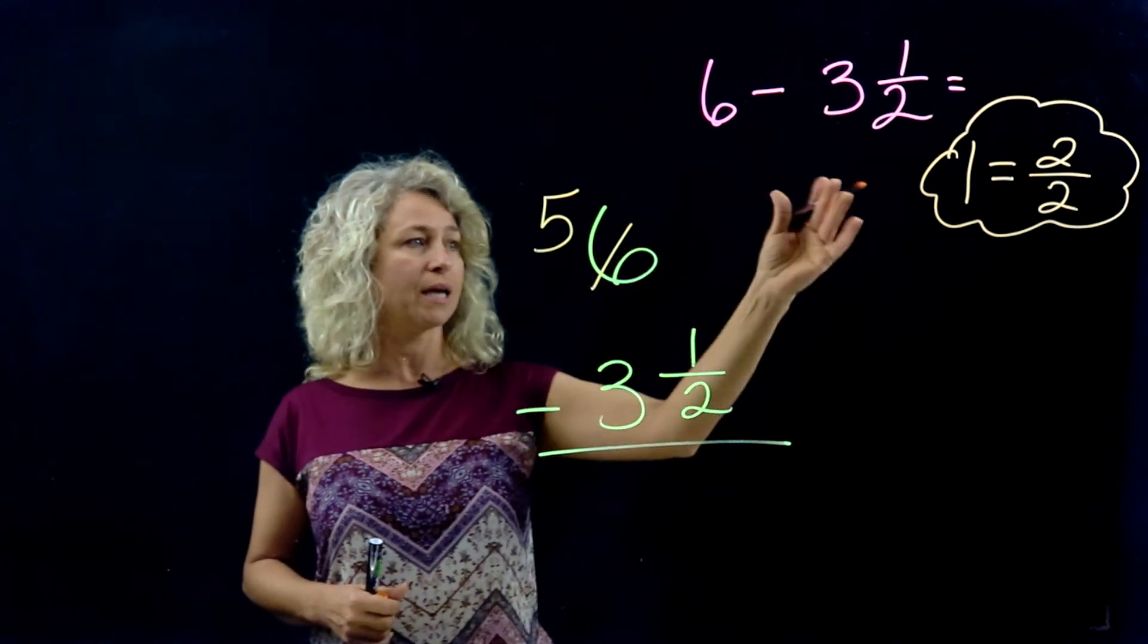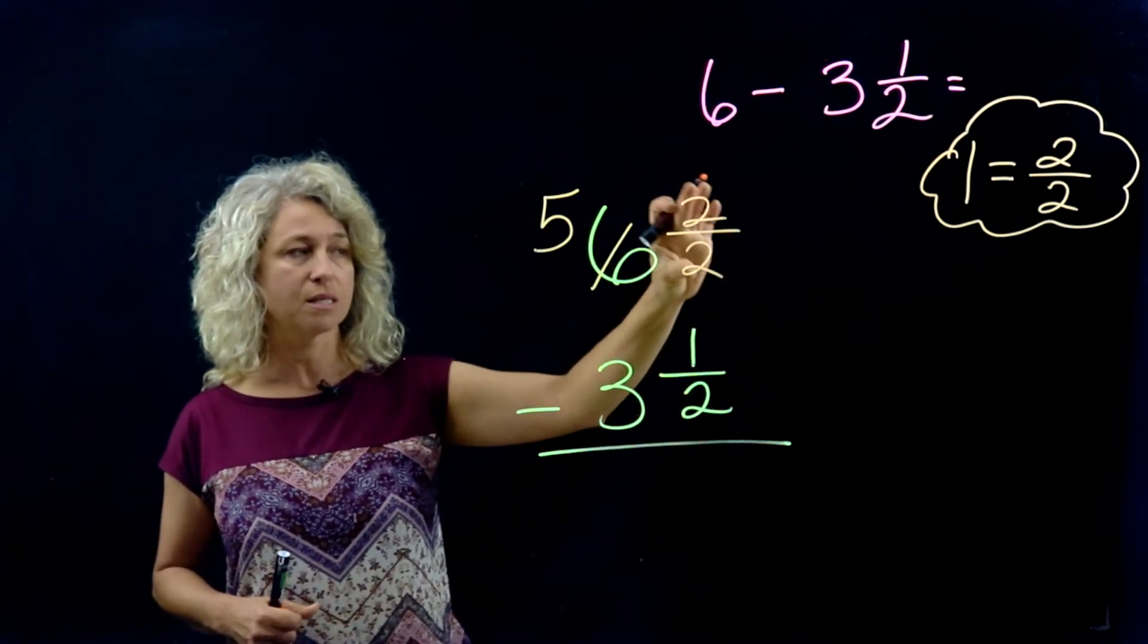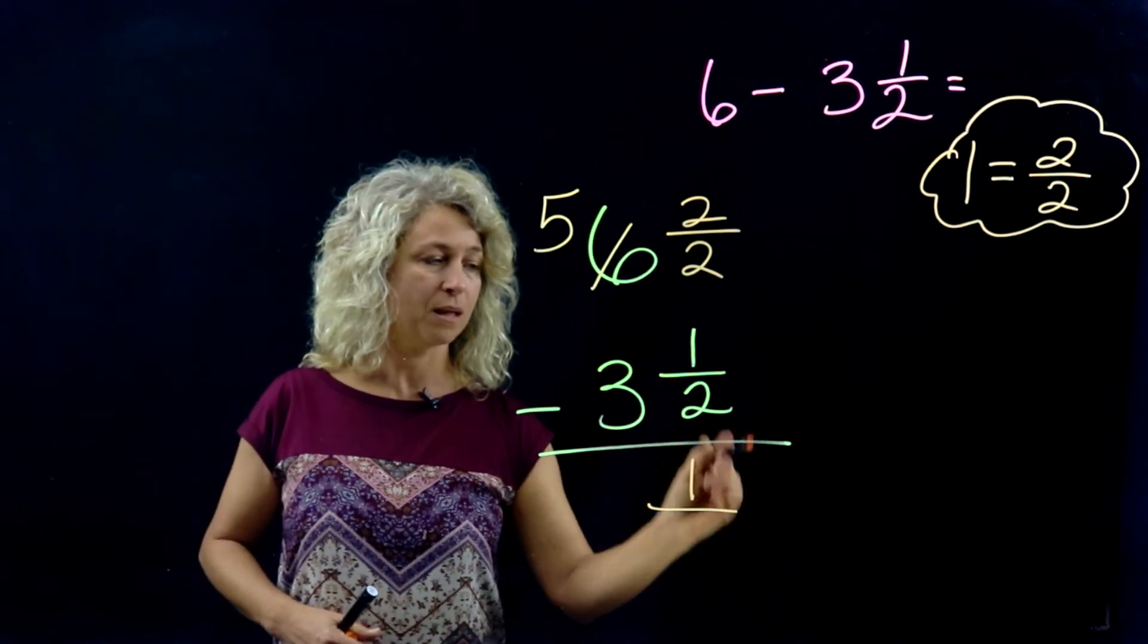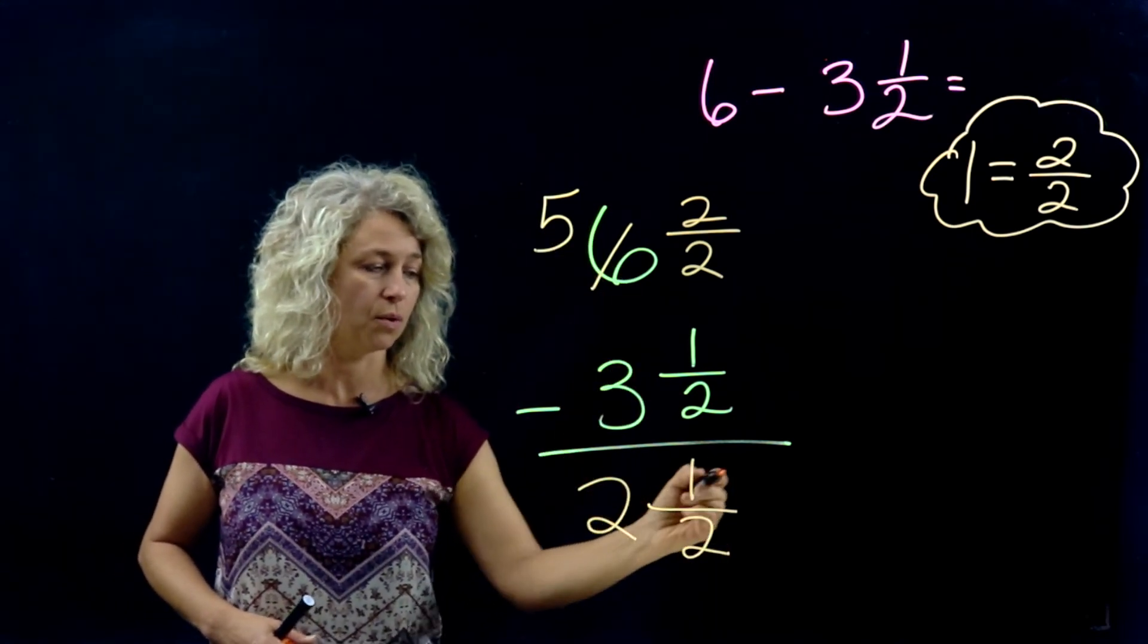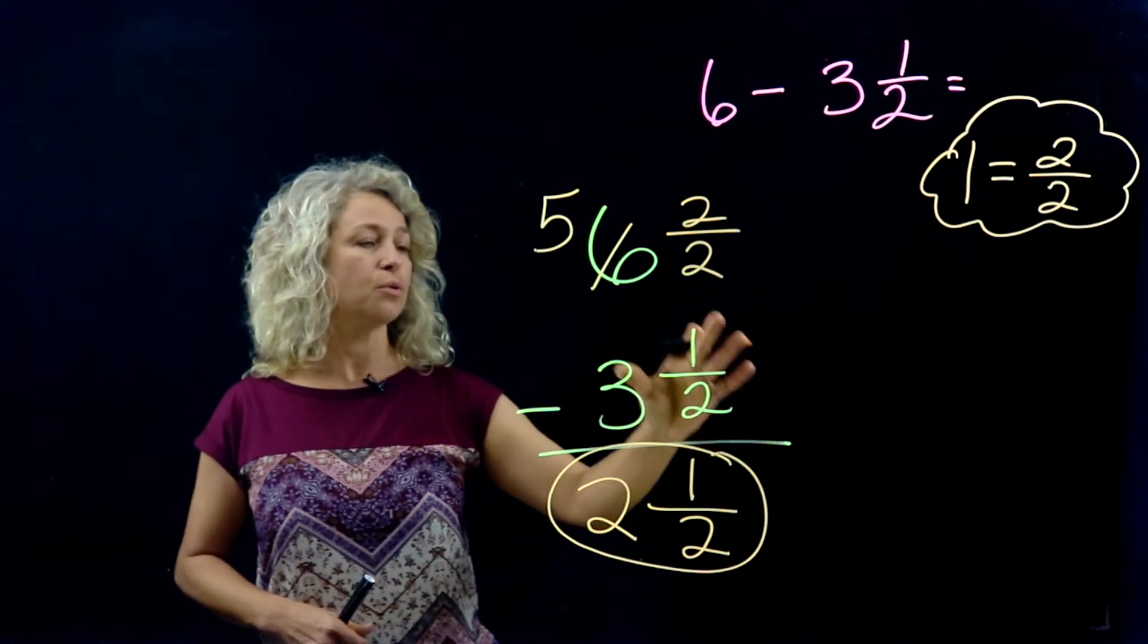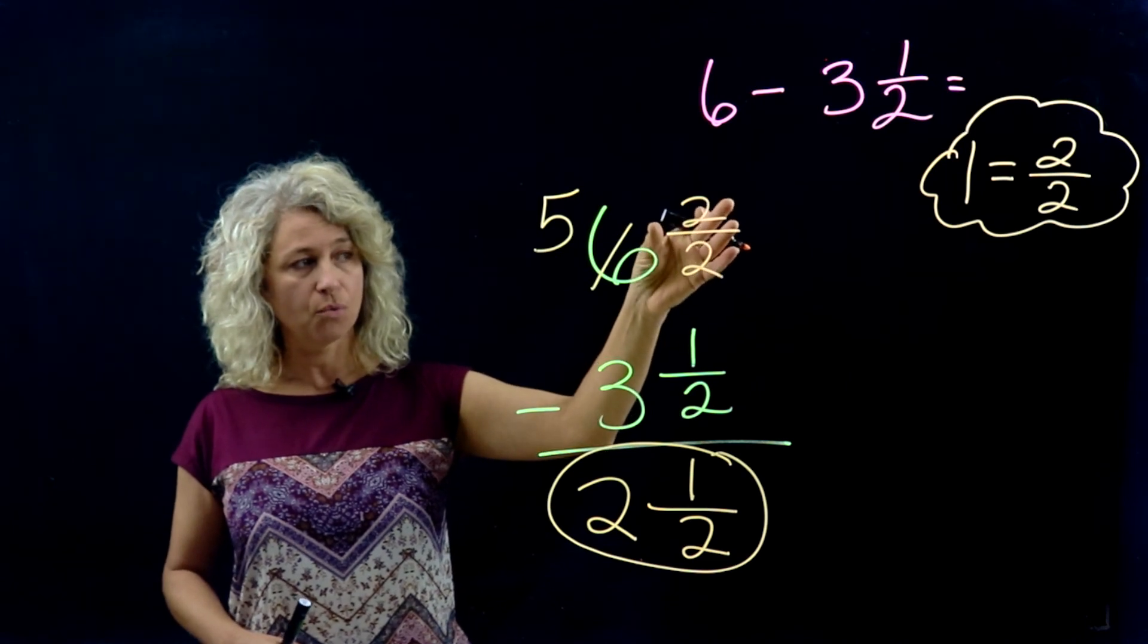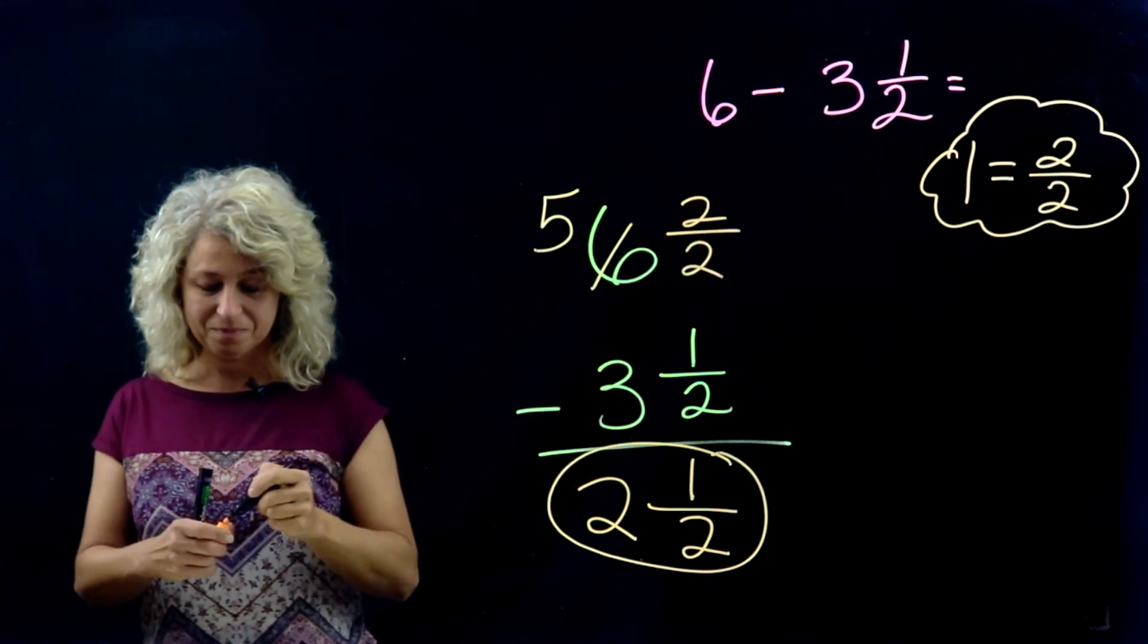So now I can subtract. Two minus 1 is 1, the denominator stays the same. Five minus 3 is 2. So here is the answer: 2 1/2. Always be careful when you're subtracting that you don't just bring down the 1/2. Think in your mind, how am I subtracting 1/2 from nothing? Make sure that you regroup in order to rename and make this the whole number 1 first.